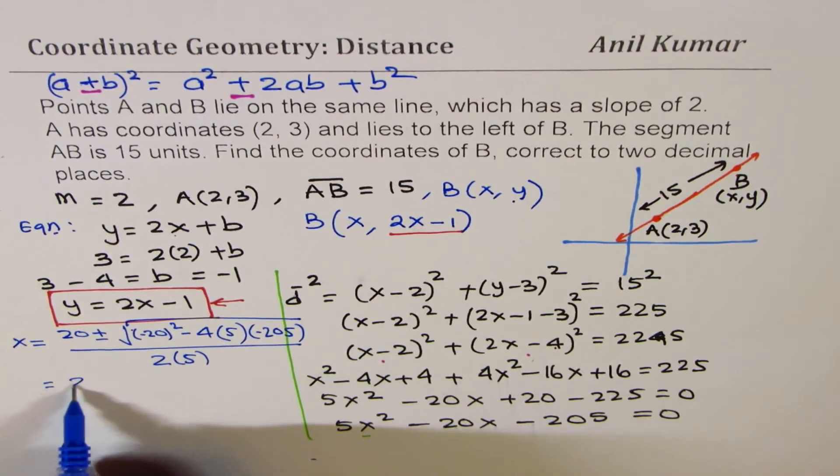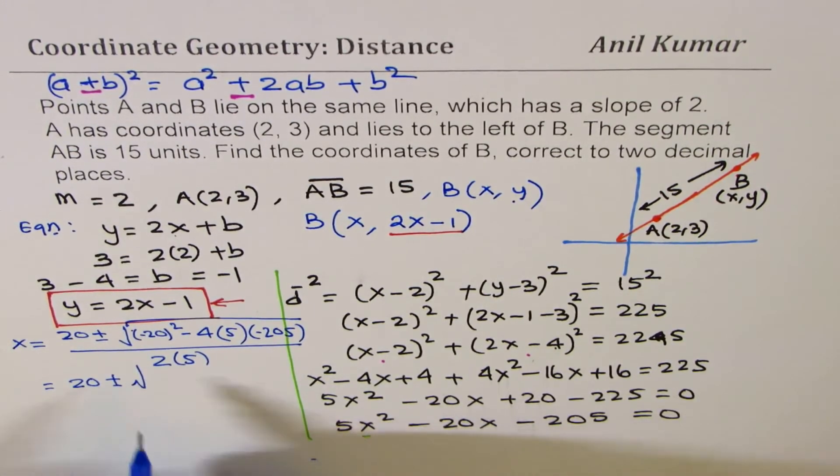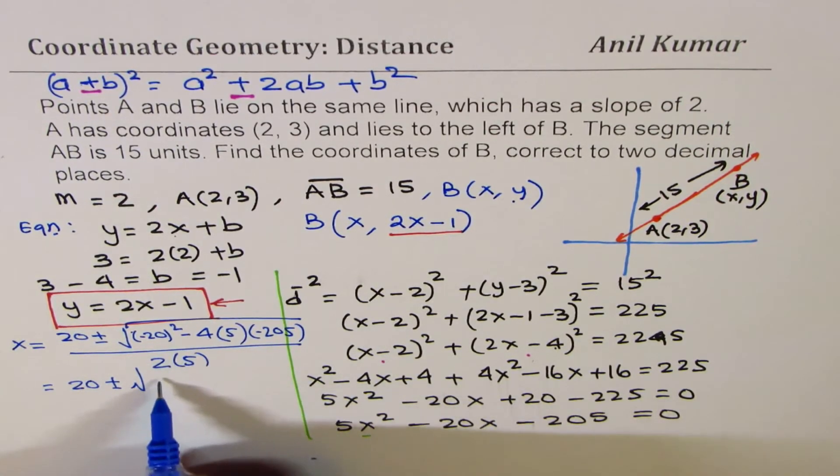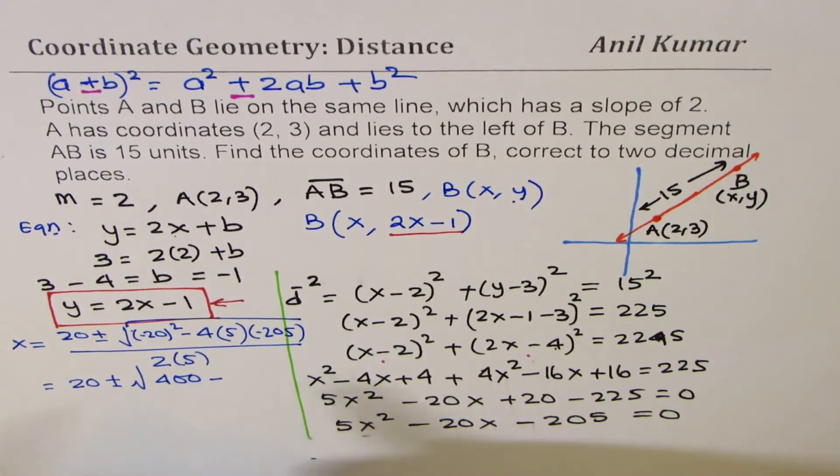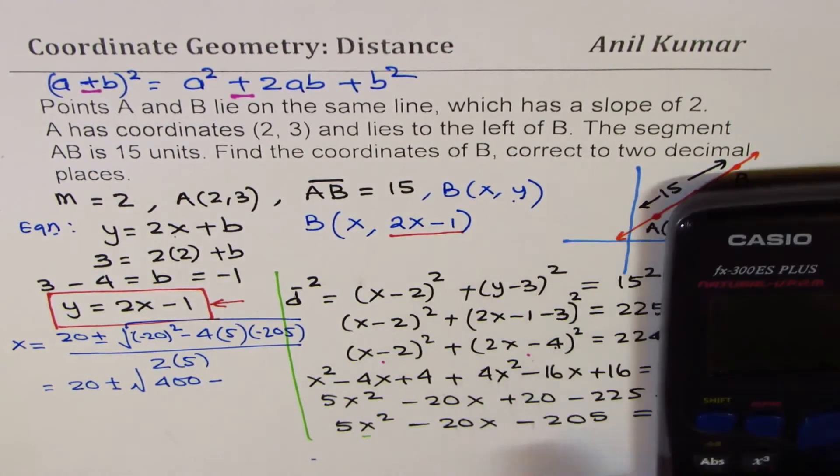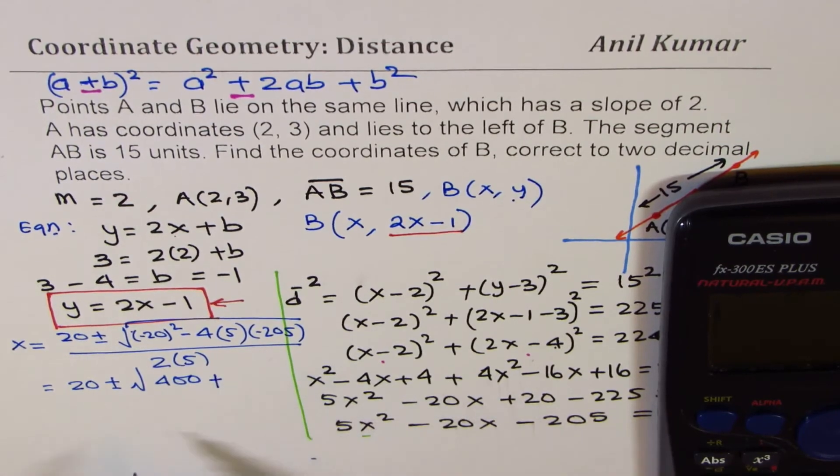So, what we get here is 20 plus minus square root of 200. 20² is 400. We can use calculator, actually. 400 minus. We have to multiply this. So, these two negatives will make it positive, right?